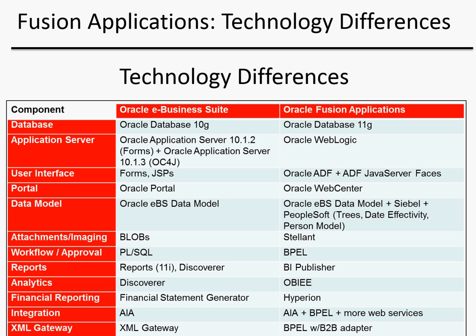Financial reporting, which used to be contained within the Financial Statement Generator, is now handled by Oracle Hyperion as its financial reporting technology. Integration through web services and SOA technologies, originally done through a complex product called Application Integration Architecture, is now built into Oracle Fusion Applications, as all of Fusion Applications' technology is built upon the SOA framework. Fusion Applications also incorporates BPEL workflows and more web services, and the XML Gateway used inside Oracle E-Business Suite has been replaced with BPEL with a B2B adapter.